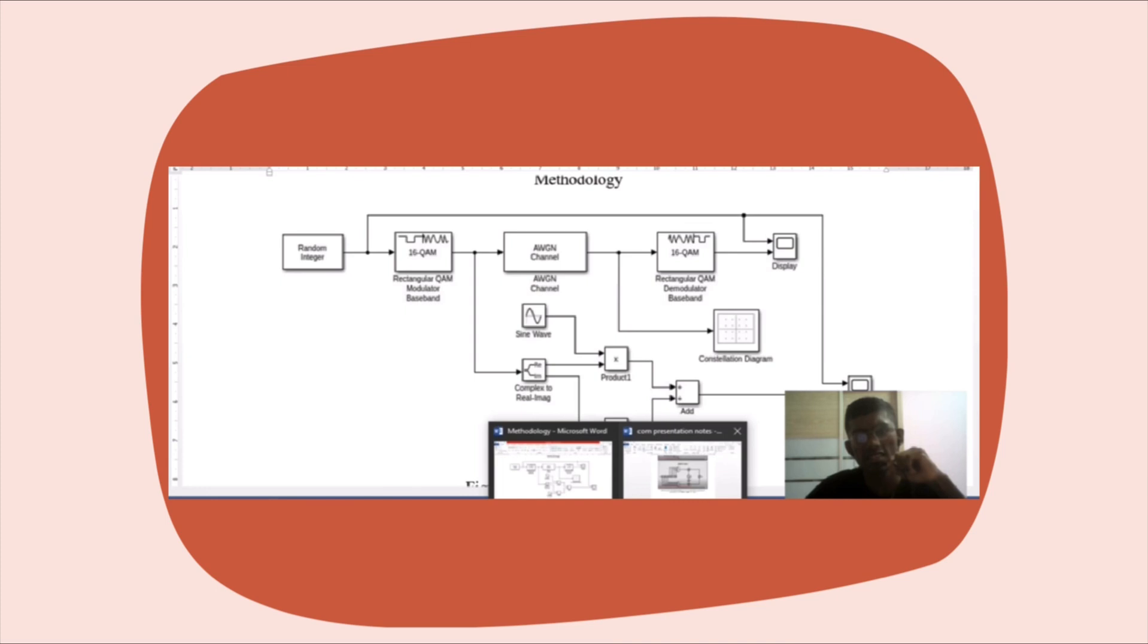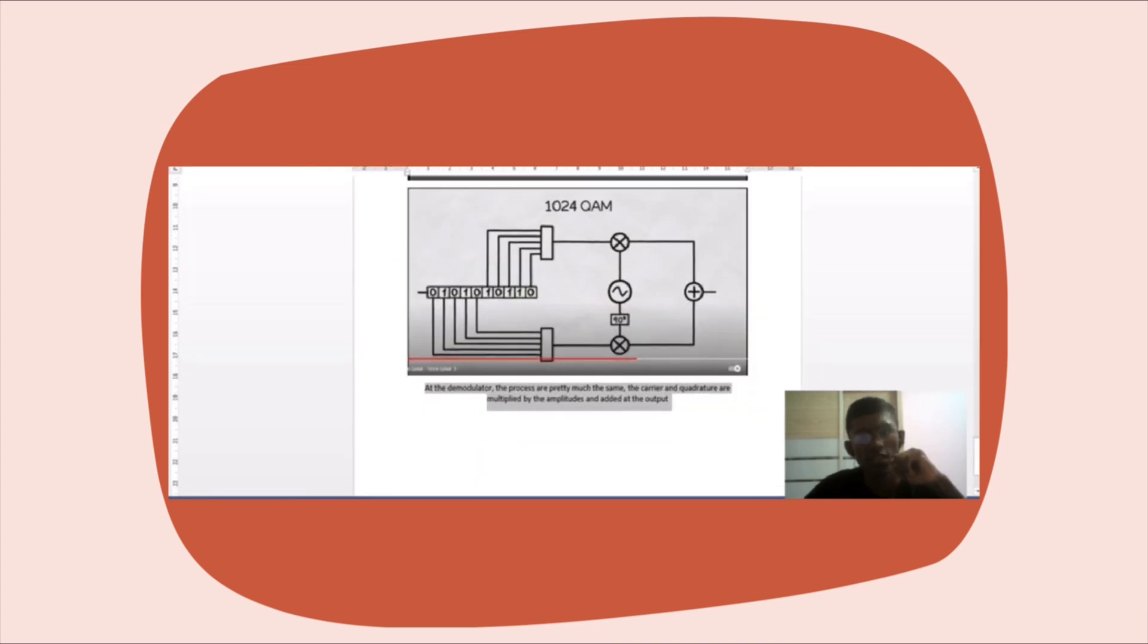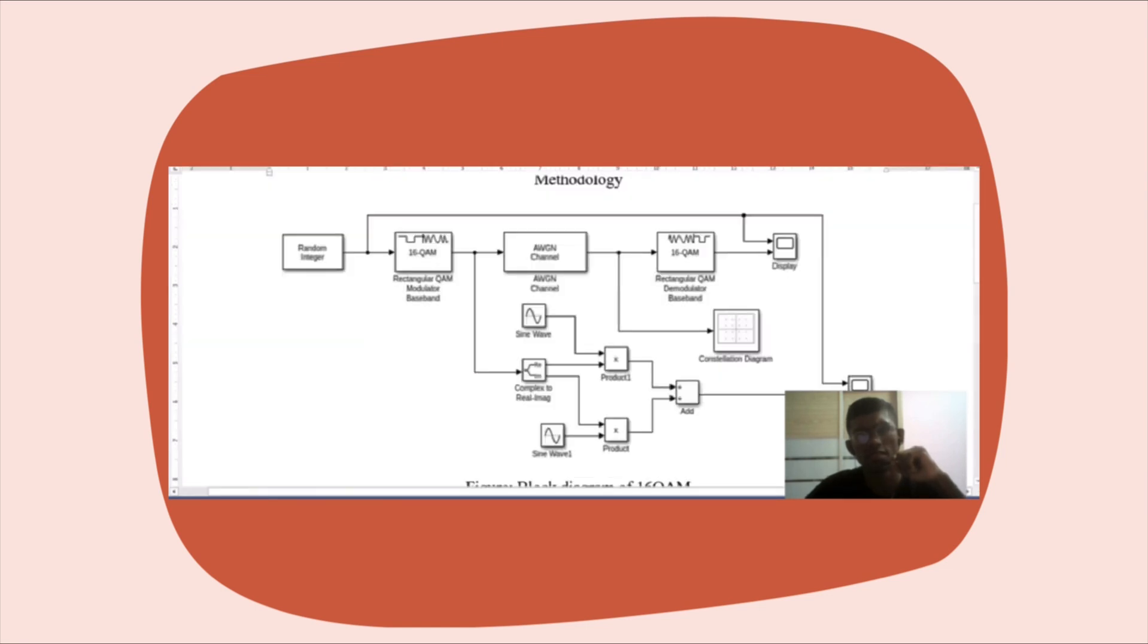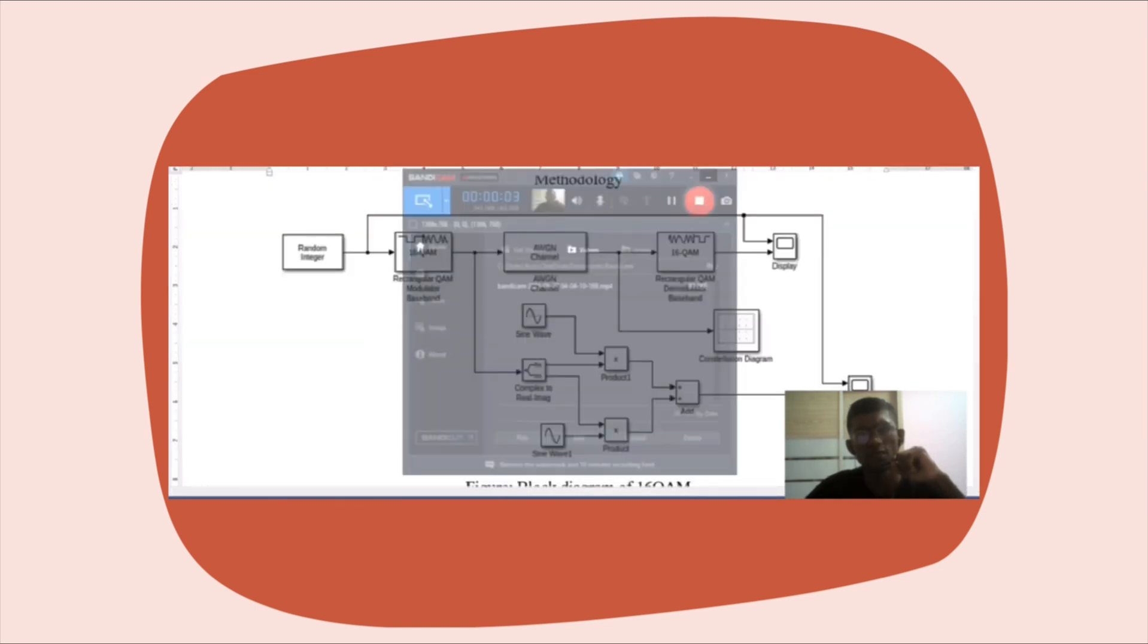Lastly, we are at the demodulator. The process is pretty much the same. The carriers in quadrature are multiplied by the amplitude and added together to get the output. That's all about the block diagram that we did. Thank you.